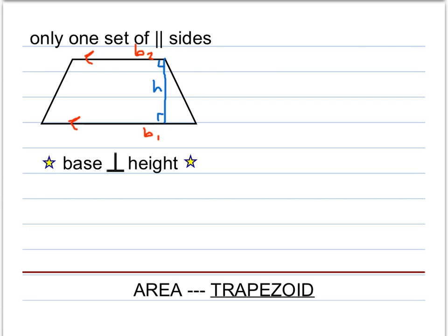The area of a trapezoid is 1/2 times the quantity b1 plus b2, in other words, the sum of the bases times the height. So once again, area is the sum of the bases times height times 1/2.